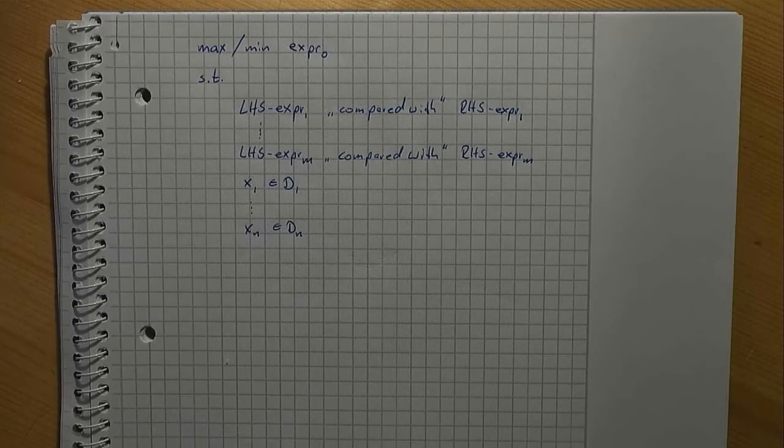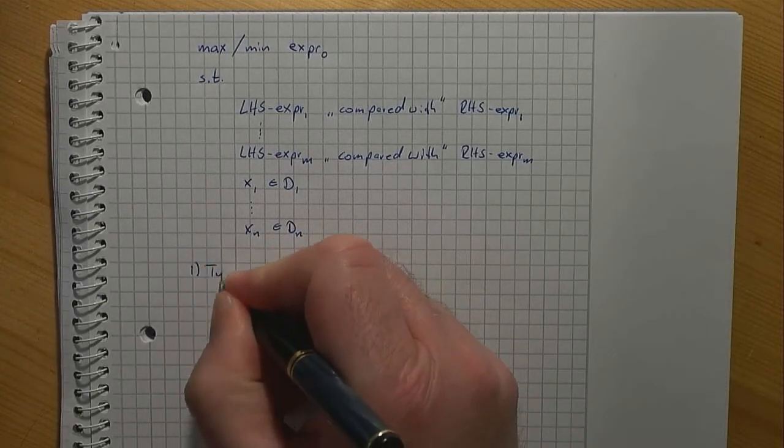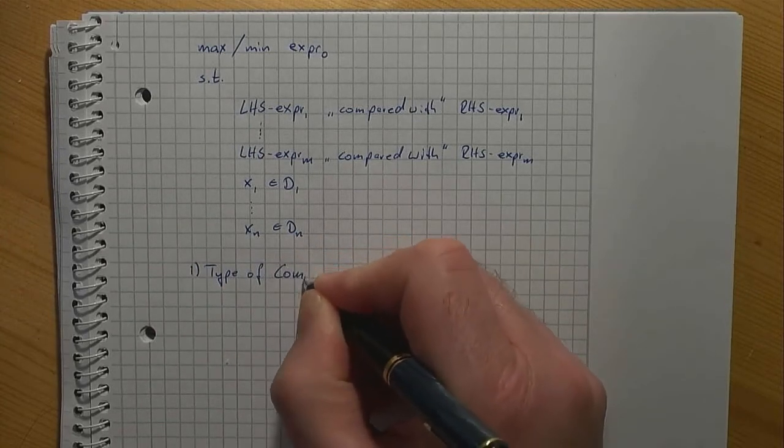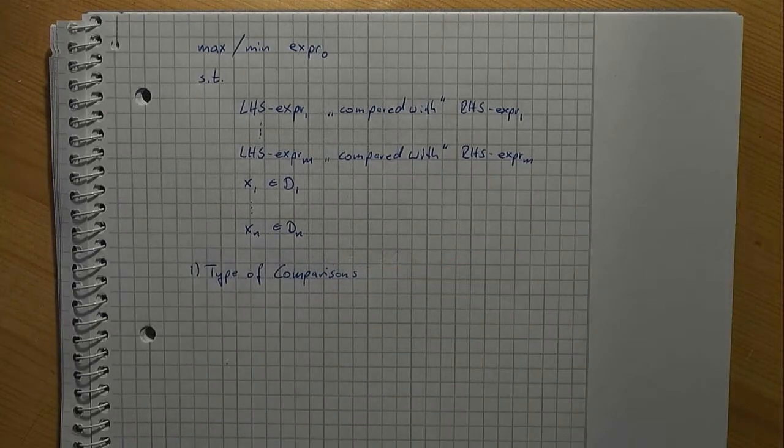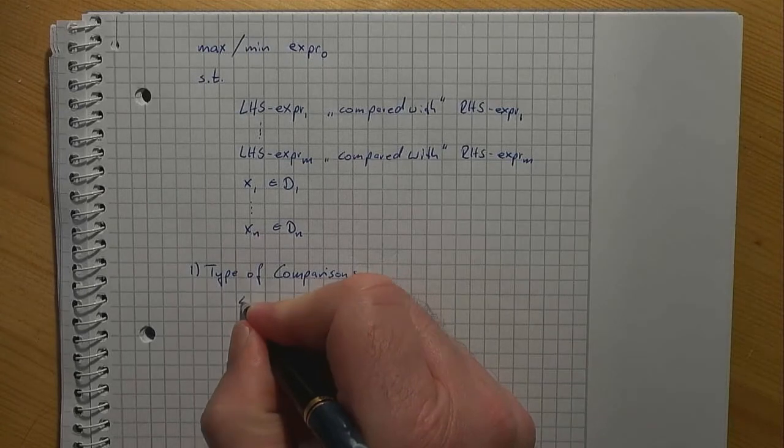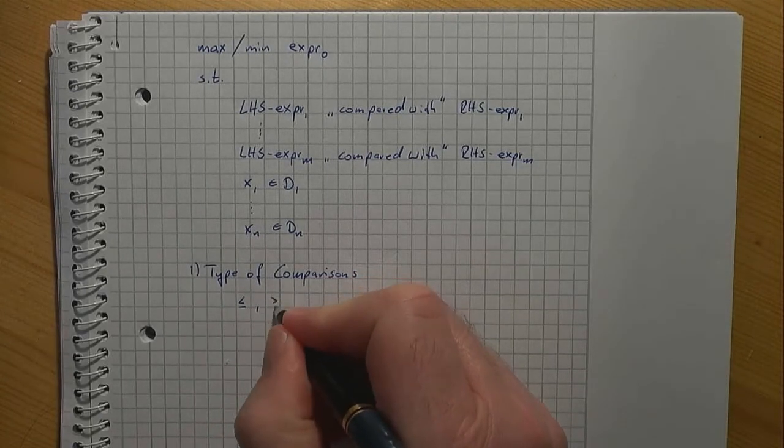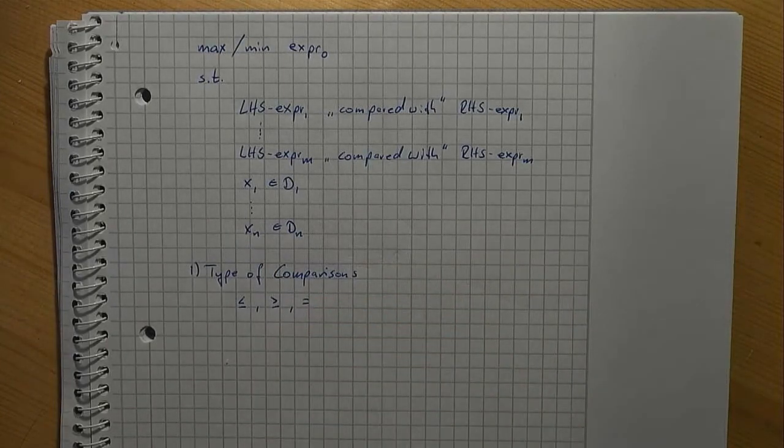Let's start with the comparisons we can make in order to formulate a constraint. For the special case we allow less than or equal to, greater than or equal to, or equal to constraints.